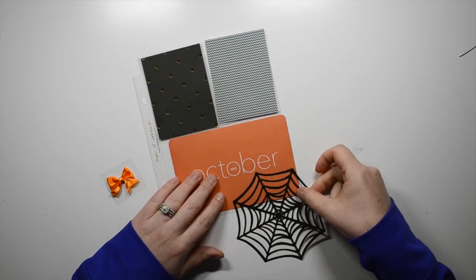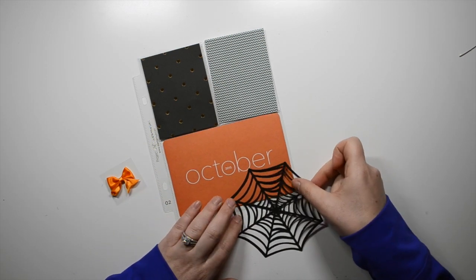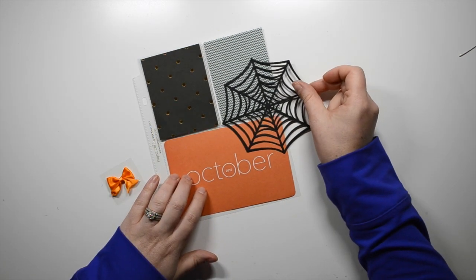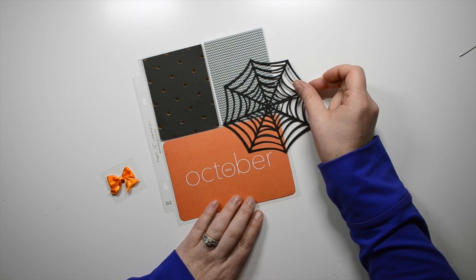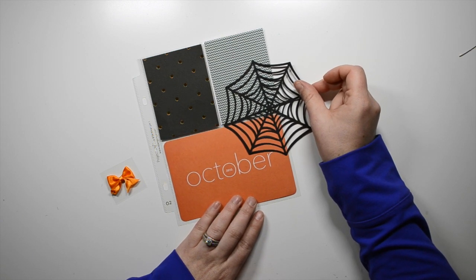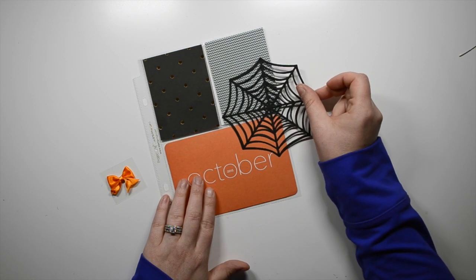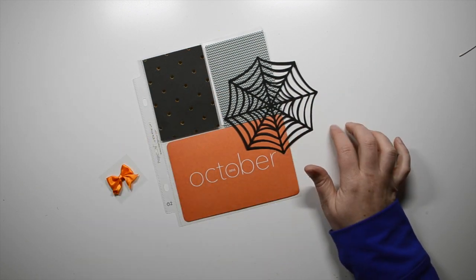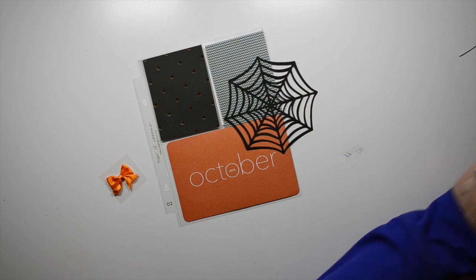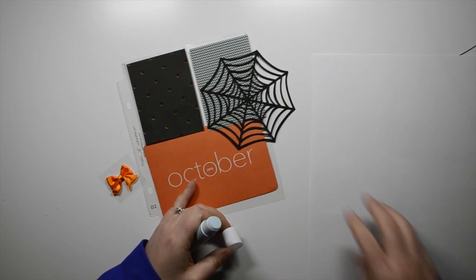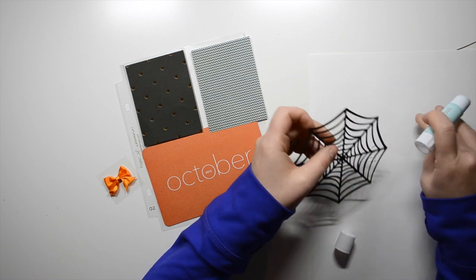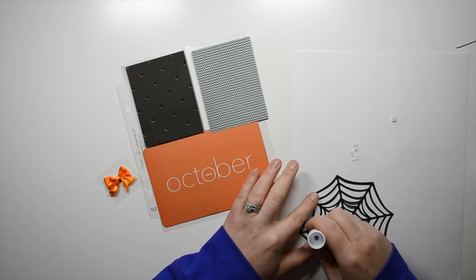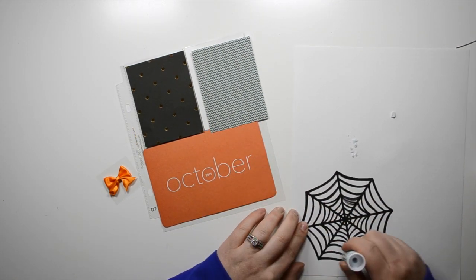In my Studio Calico kit, I got this 4x6 card that said October 2015, and so I thought that would be a really awesome way to start my cover page. My cover page is pretty simple. I'm trying really hard not to make my album really thick, so I didn't want to go embellishment heavy on one page, but just spread them out.